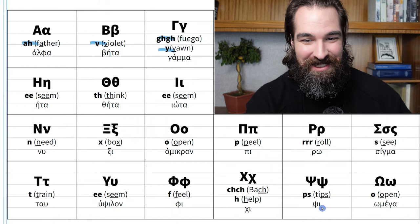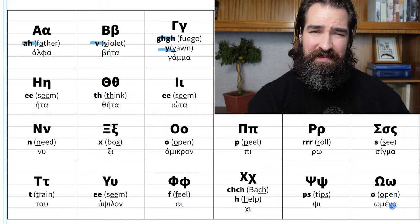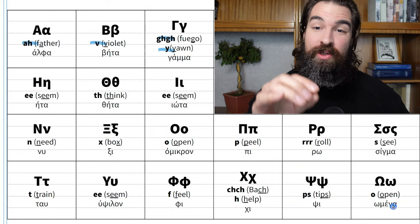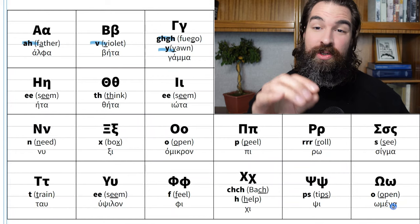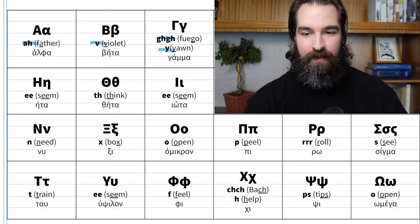Psi looks like Poseidon's trident and makes a PS sound, like at the end of the word 'tips.' And then finally, omega — the last letter of the alphabet — is a vowel making an O sound, just like omicron. Omicron means 'small O' and omega means 'big O,' because at one point omega was held longer. Now they both just make an O sound.